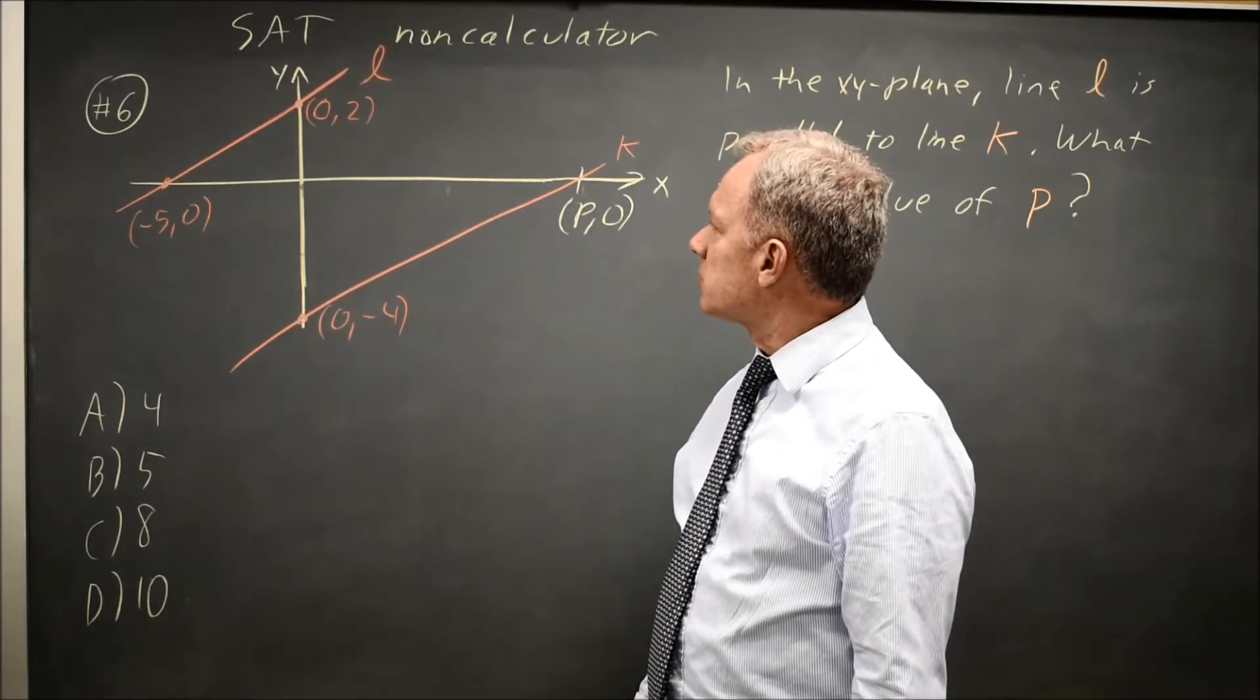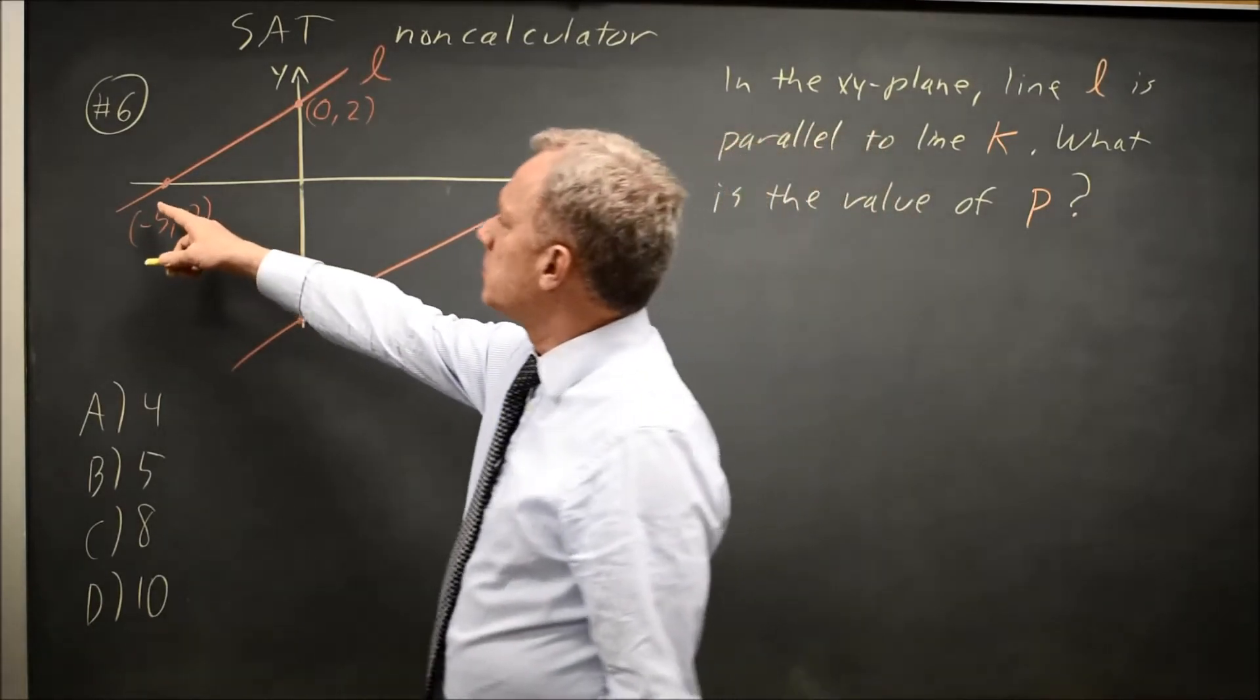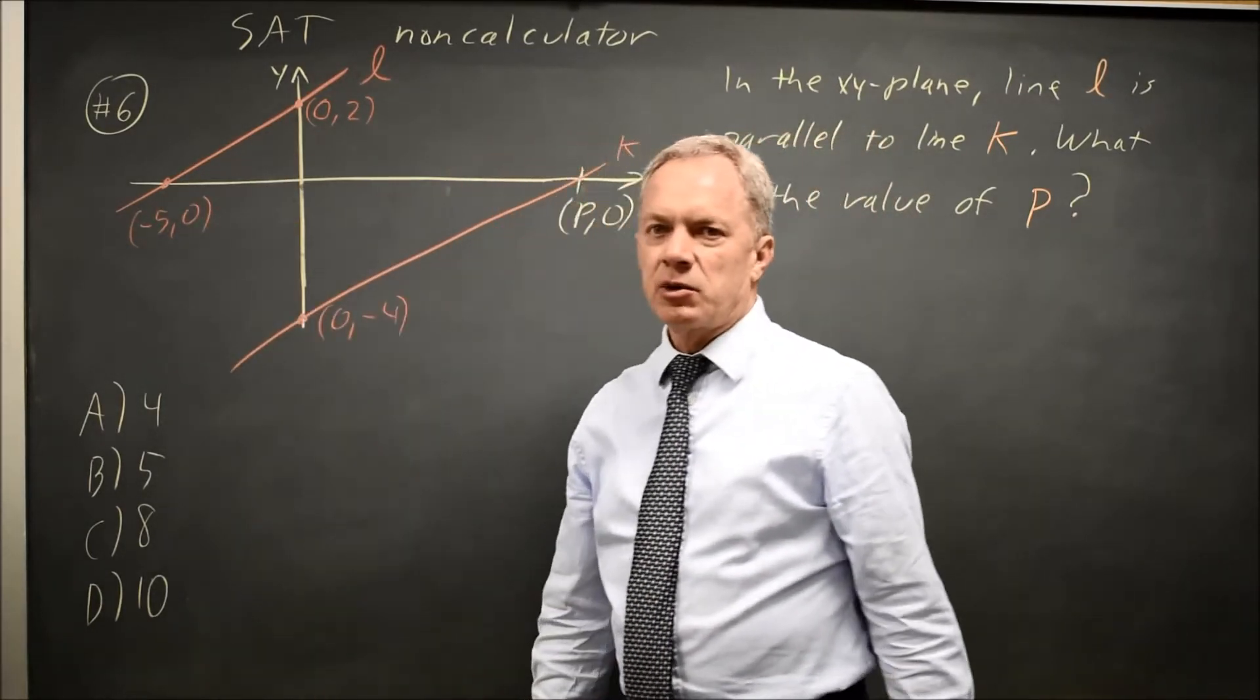With two parallel lines, or at least in their picture it's parallel, L and K. They give you two points on L, the x and y-intercepts.